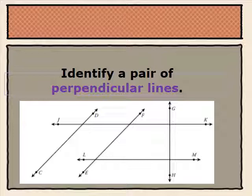Next we'll be identifying another pair of perpendicular lines. In the diagram below, we can see that line LM and line GH also creates a pair of perpendicular lines. Because where they intersect at their vertex, we see that there is a right angle — a 90 degree angle or square corner.